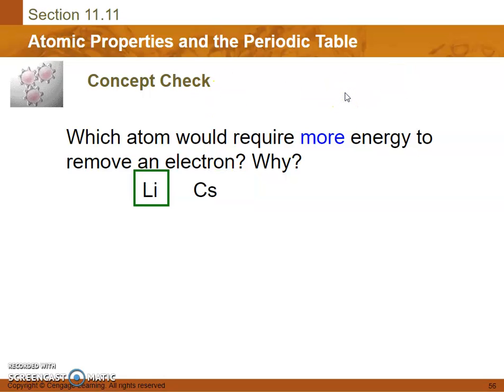Which atom would require more energy to remove an electron? Lithium or cesium? Well, lithium because it is higher up on the periodic table. The higher you are, the harder it is to remove an electron.